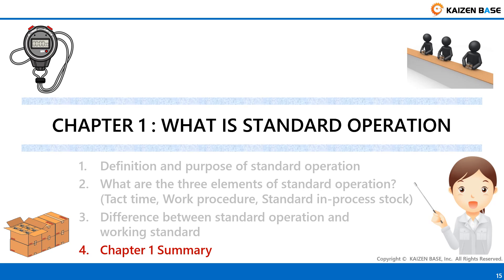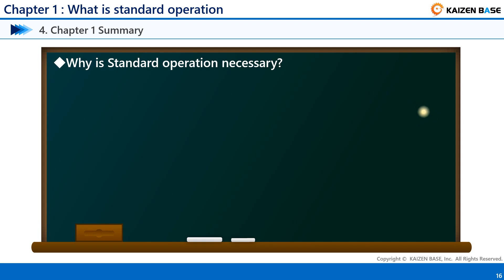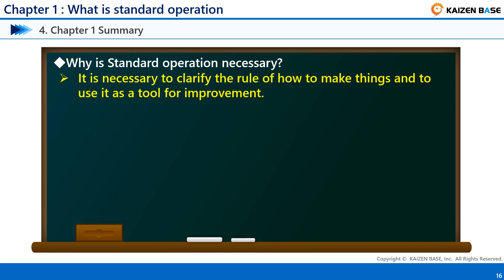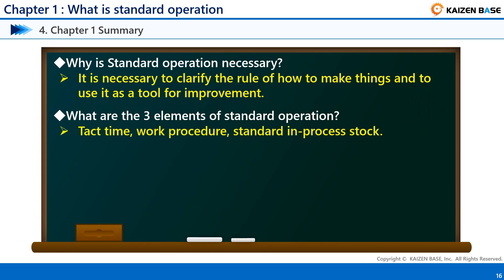Finally, let's summarize Chapter 1. Question 1: Why is Standard Operation necessary? It is necessary to clarify the rule of how to make things and to use it as a tool for improvement. Question 2: What are the three elements of Standard Operation? Takt Time, Work Procedure, and Standard In-Process Stock. Those that do not have all three elements cannot be called Standard Operation.